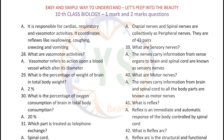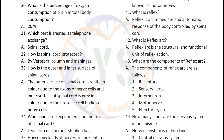What is the percentage of brain weight in total body weight? 2%. What is the percentage of oxygen consumption of the brain in total body consumption? 20%. Which part is treated as the telephone exchange in our body? Spinal cord. How is the spinal cord protected? By the vertebral column and meninges. How is the outer and inner surface of the spinal cord? The outer surface is white in color due to the axons of nerve cells, and the inner surface is grey in color due to the presence of cell bodies of nerve cells.